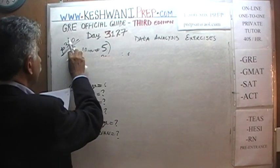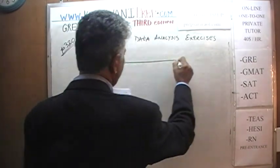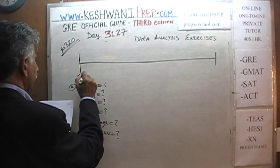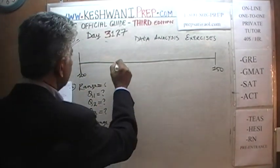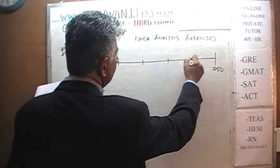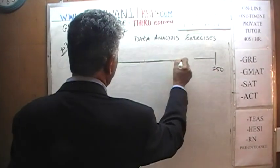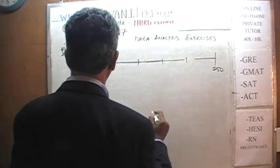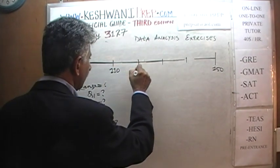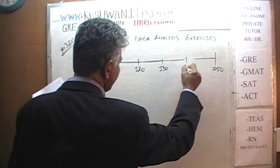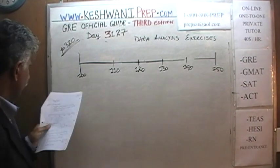Let's start from up here so that we have more room. The scale goes all the way from 100 to 150. We are going to divide this into 5 equal parts: 1, 2, 3, 4, and 5. So dividing into 5 from 100 to 150, these marks are 110, 120, 130, and 140. That's the scale we are going to use.